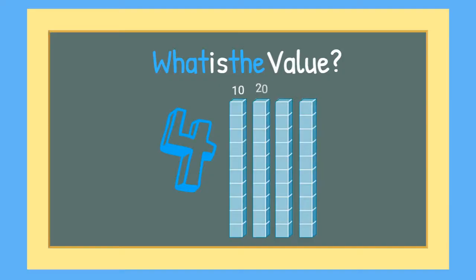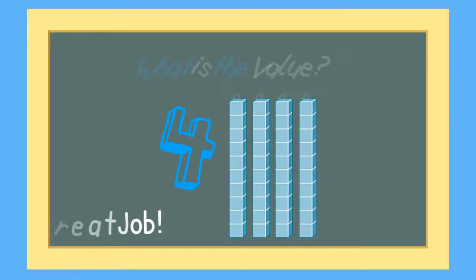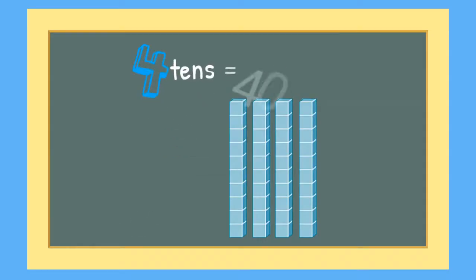10, 20, 30, 40. Great job! 4 groups of 10 equals 40.